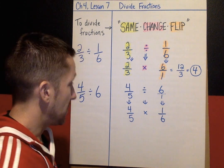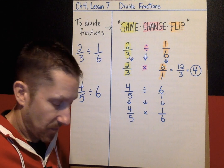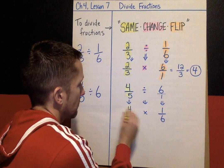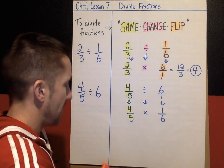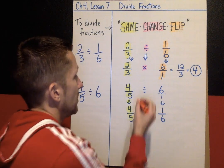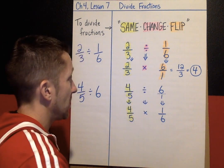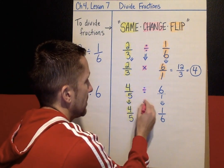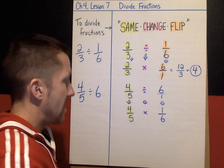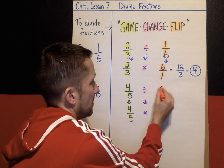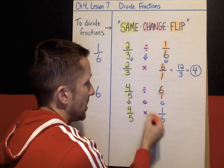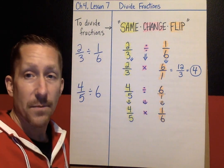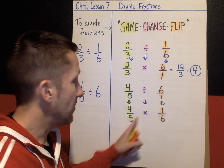Let's highlight those steps. Same — this one stayed the same, first fraction stayed the same. Change — dividing got changed into multiplying. And the flip — we had a 6, which is the same thing as 6 over 1; we flipped that into its reciprocal. And here's what we're solving: this multiplication problem, 4/5 times 1/6.